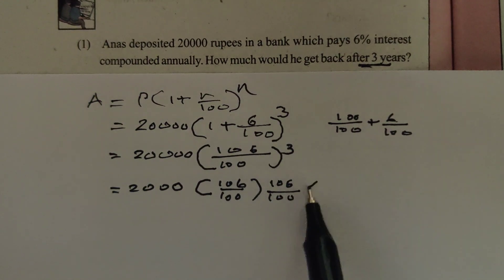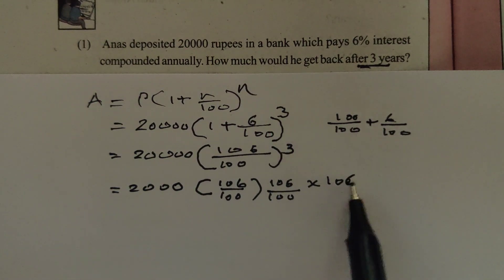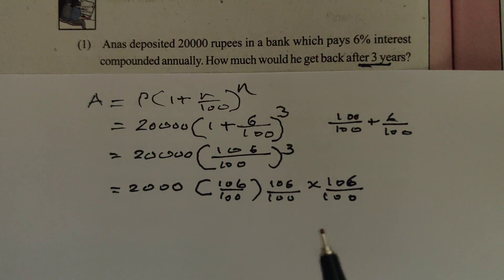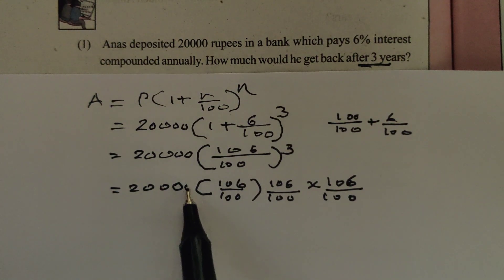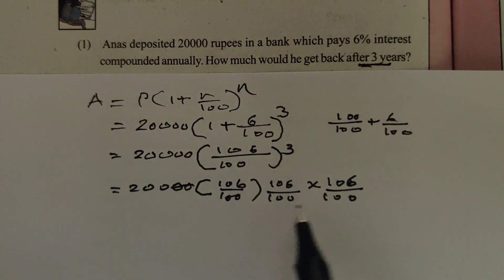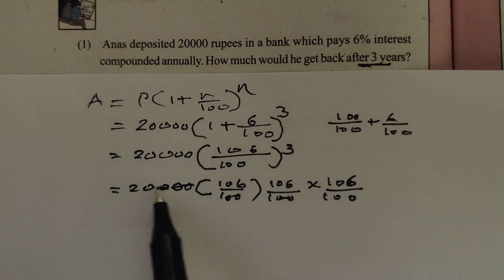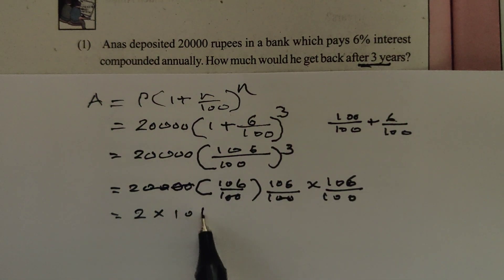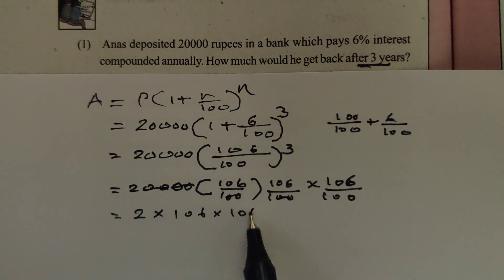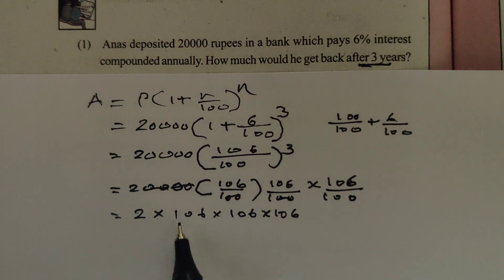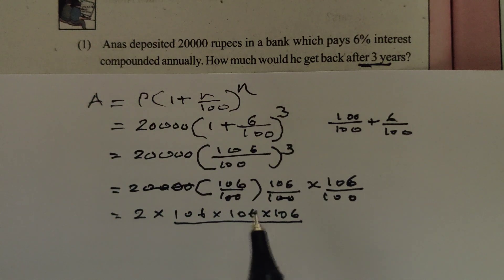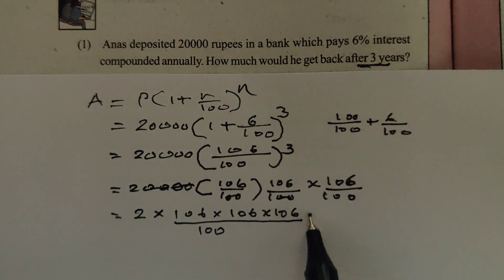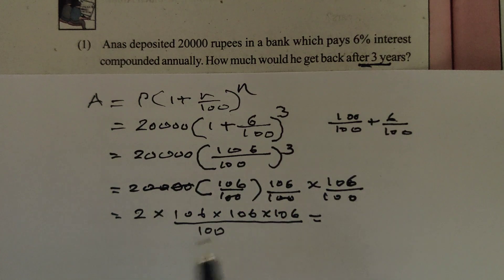We can cancel zeros from 20,000 with the denominator. The remaining calculation is 2 × 106 × 106 × 106 divided by 100, multiplied three times. Working through this calculation gives us the answer.